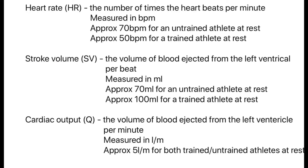Now for some definitions and values you need to know. Heart rate is the number of times the heart beats per minute — approximately 70 beats per minute for an untrained athlete at rest, and approximately 50 beats per minute for a trained athlete at rest. Stroke volume is the volume of blood ejected from the left ventricle per beat, measured in millilitres — approximately 70 ml for an untrained athlete at rest and approximately 100 ml for a trained athlete at rest.